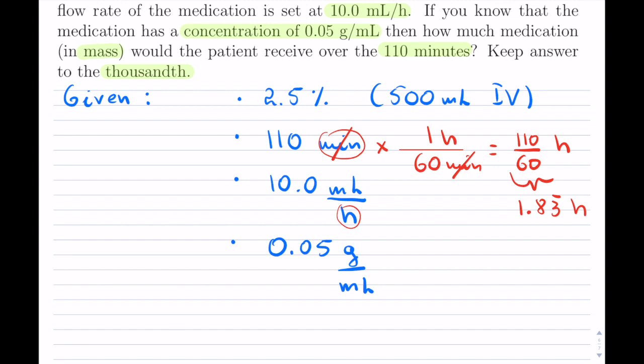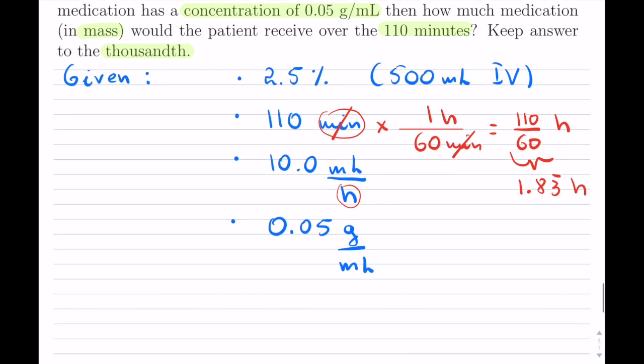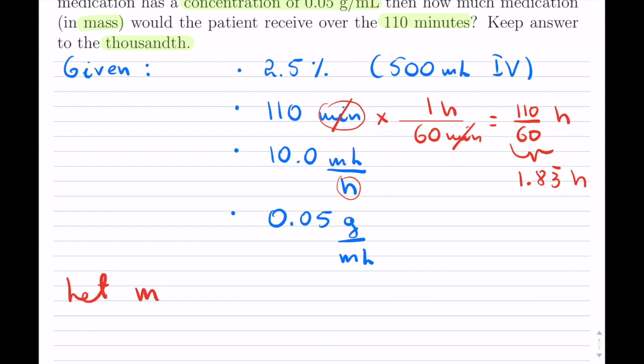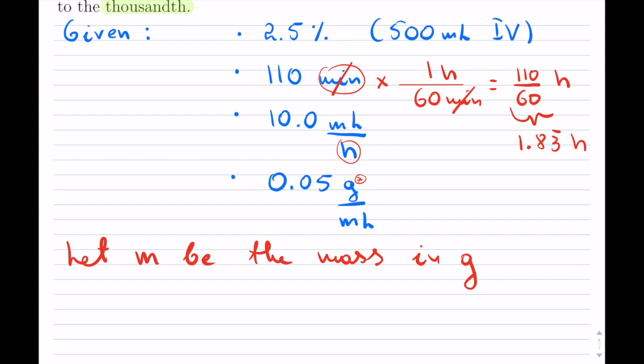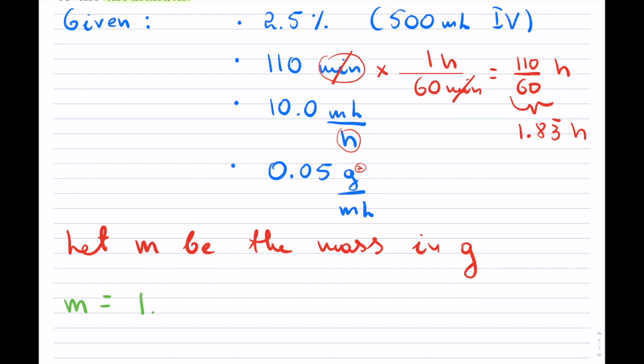I'm going to put a little bar for the repeater of 3. And then I'll put as many 3's as I can in the calculator. That's how many hours we have been running this medication for. Everything else seems okay. I have milliliter and milliliter there. So all is good there. So we are supposed to solve. So let M be the mass, and it's going to be in grams.